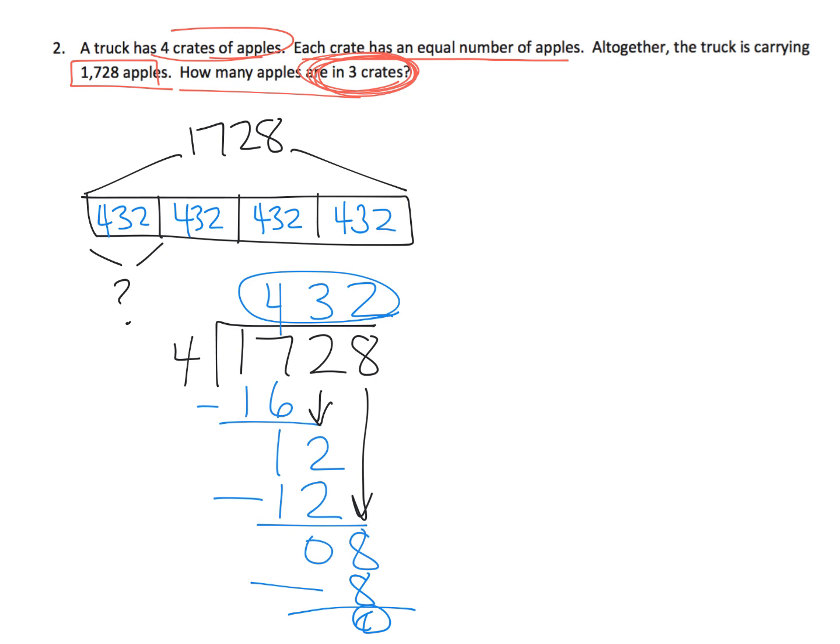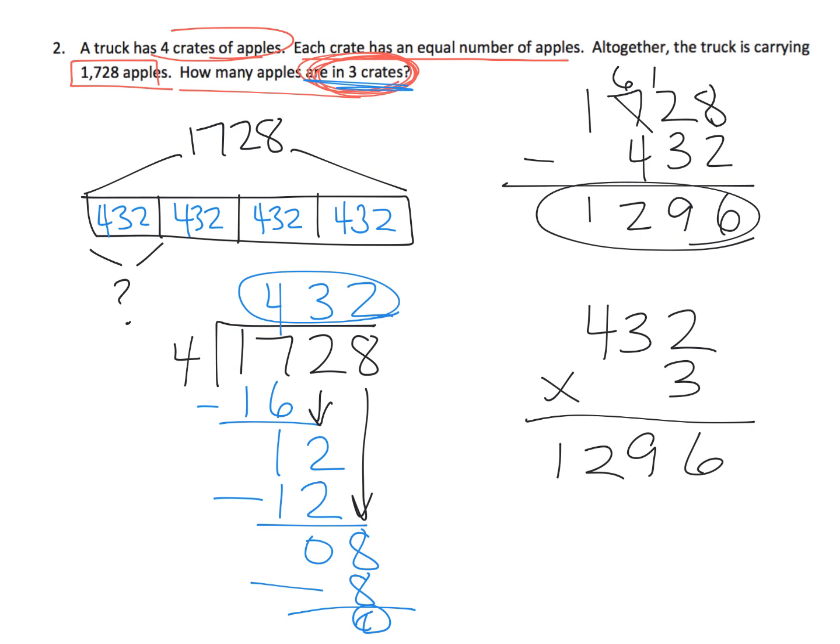Now we want to know how many apples are in 3 crates. A couple of ways to do that. Well, one way to do it is to say, well, we could just take the total 1,728 and subtract 432. And the answer is 1,296. Because what we did was we took the whole, which is 1,728, and subtracted one box, one crate, and you're going to get 1,296. Of course, another way you could have done it, we could have done 432 times 3 and gotten the exact same answer. In that case, we're taking 432 and multiplying by 3 because we have, we want 3 of them.